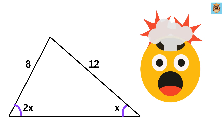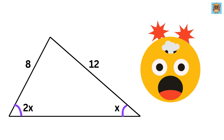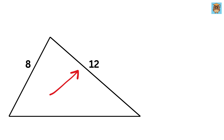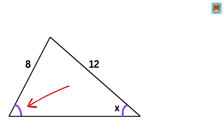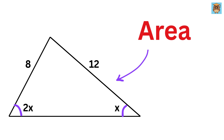This question is going to blow your mind as it looks easy, but is surprisingly tricky. We have a triangle whose this side is of length 8, and this side is of length 12. Then this angle is x, and this angle is equal to 2x. Using only this much information, you need to find out the area of this triangle.